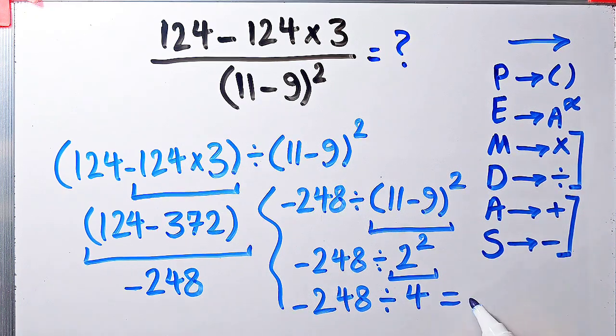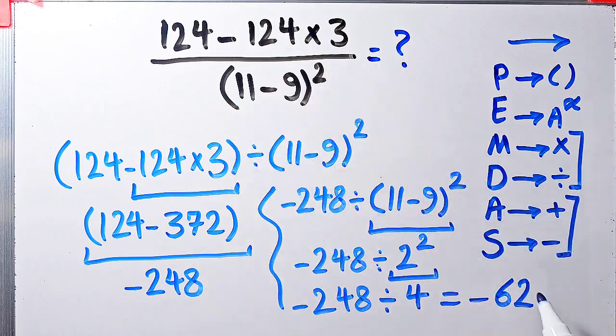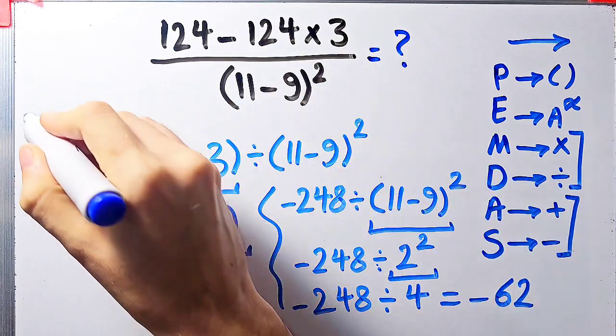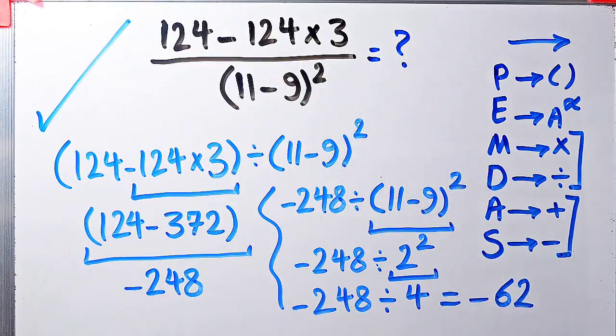Now we have negative 248 divided by 4, which equals negative 62. The final answer of this question is negative 62. To see more math videos, subscribe to the channel. Goodbye!